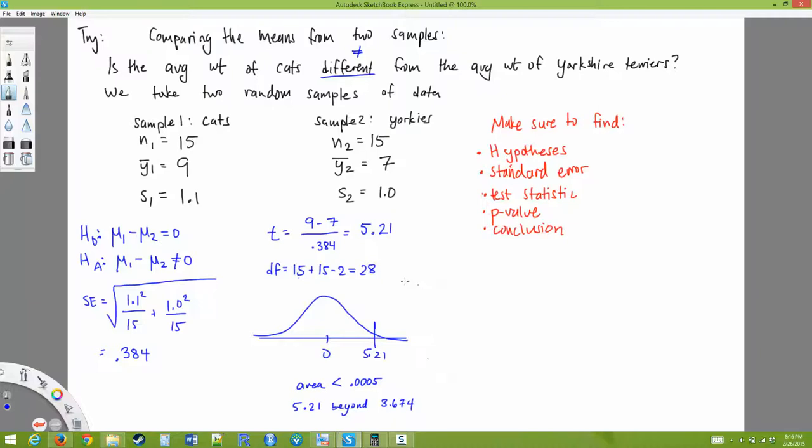Okay, again, I have a not equal sign, so technically I'll still have to look at negative 5.21. So my p-value, total p-value, is going to be 2 times my tail area. So my p-value, whatever it is, is less than 0.001, 2 times 0.0005.